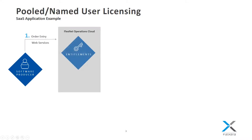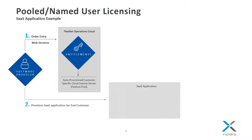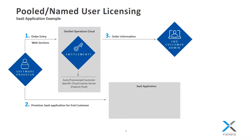This slide illustrates the entitlement flow used for this SaaS application demonstration. The software producer first creates the customer entitlement in FlexNet Operations, Flexera's entitlement management system. This process automatically creates a unique cloud license server containing a pool of features for the customer. The software producer will then provision an instance of the SaaS application for the end customer, who is then sent an entitlement notification email.